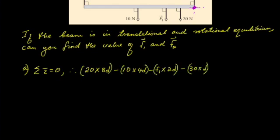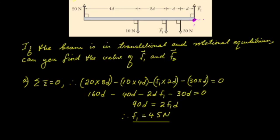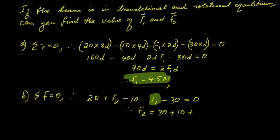We can then solve as follows and find f1 to be equal to 45 newtons. We can then take the sum of the forces to be equal to zero, applying translational equilibrium. The forces going up are positive and those going down are negative. Adding them together and making f2 the subject of the formula and substituting 45 for f1, we find f2 to be equal to 65 newtons.